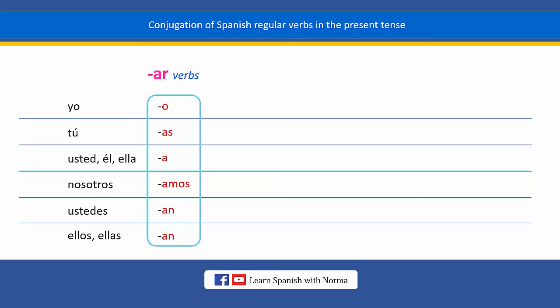In Spanish, you conjugate all infinitive verbs by changing the endings. And now, let's conjugate one verb that belongs to this group.